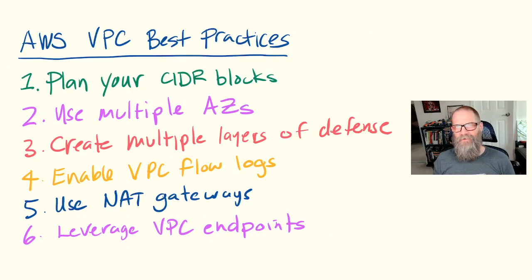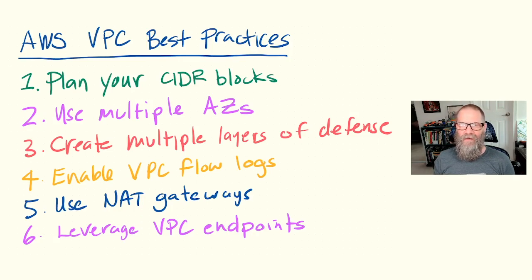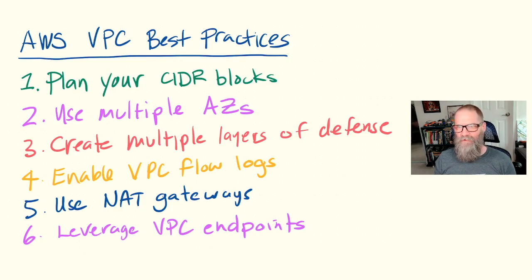I thought I'd start a new series of videos, sort of like a virtual whiteboard session, and I figured that a good starting point would be to discuss some of our best practice checklists. Recently we created a new checklist around building out virtual private clouds or VPCs on AWS. These are our six best practices and we're just going to go through these really briefly. You can grab a full res download from the website if you want to use these later for reference.